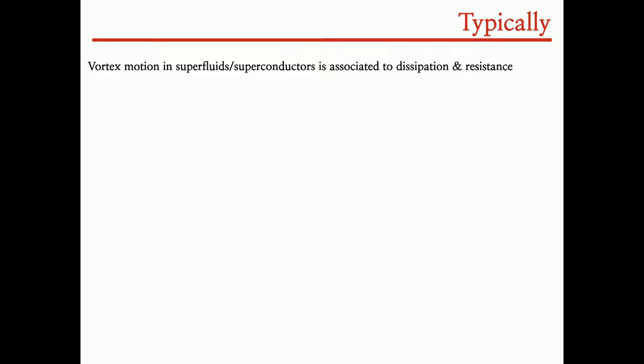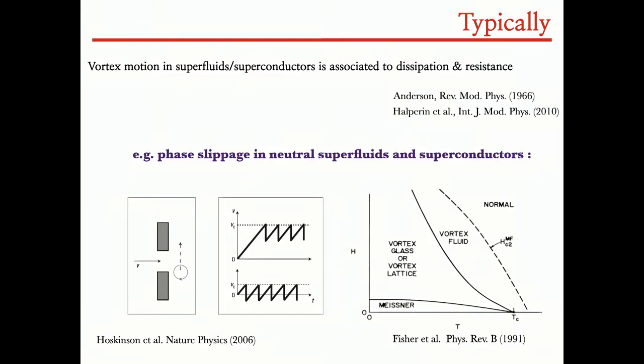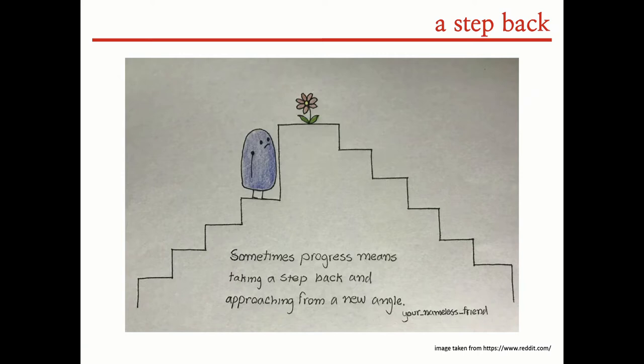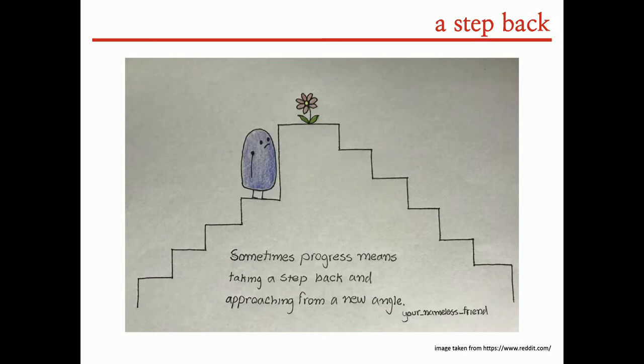This is not obvious at first order, because typically we know that vortex motion in both superfluids and superconductors is associated with dissipation or onset of resistance. Examples are given by phase slippage processes, both in helium and in superconducting states. I think to convince you of this, we have to do a step back and see things from another perspective.